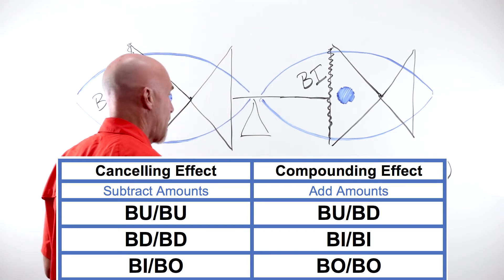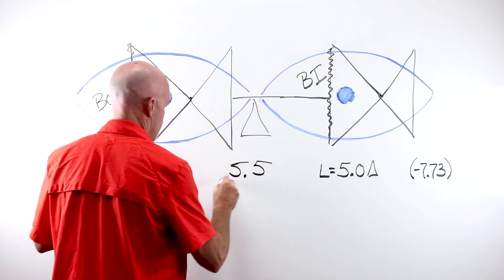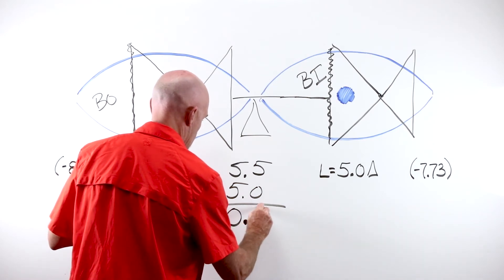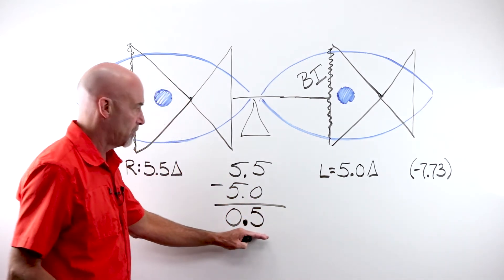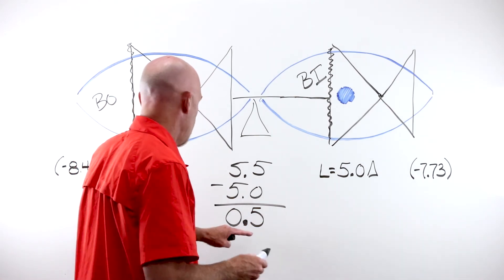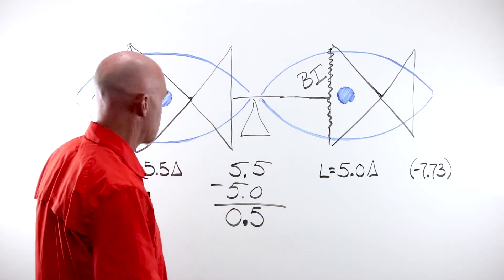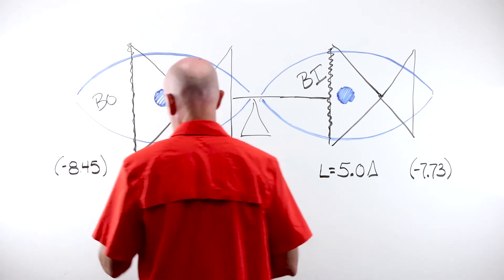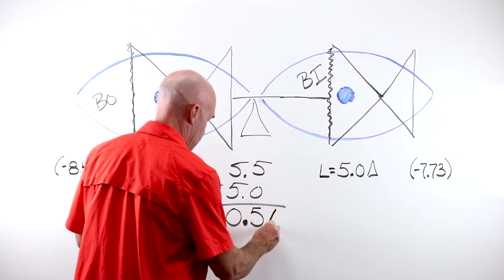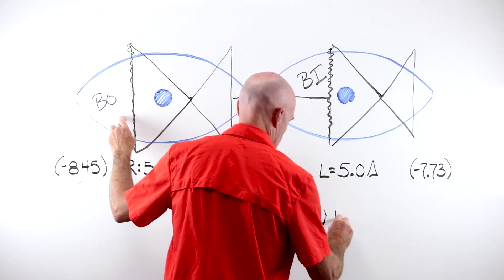So you would subtract the two amounts. If I have 5.5 and I subtract 5.0, I end up with half a diopter of prism error. Very, very little. And the full answer, we are not done yet. The full answer is assigned this amount with the direction of the strongest eye. My strongest eye, my strongest amount, is my right. I have 0.5 prism diopters base out in the right.